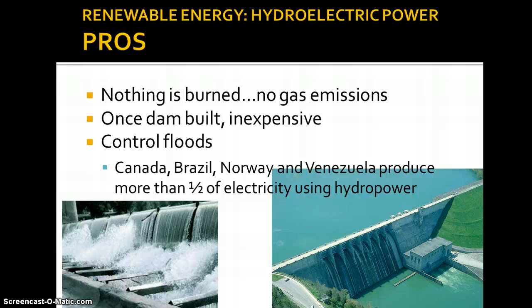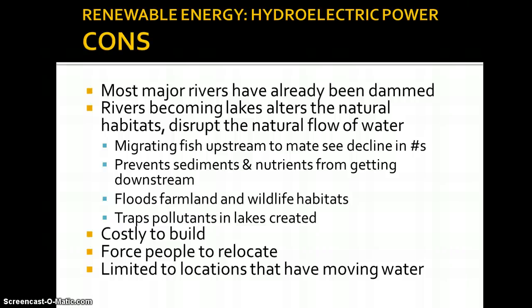A big pro to using hydroelectric power is that you are not burning any fuels — there are no emissions whatsoever, no pumps, nothing. Once the dam is built — of course it's expensive to build — but once it's built, the ongoing expense is very low. It also controls floods because you can control how much water goes through. If there's a lot of rain, you can let more water through and actually get more electricity. Canada, Brazil, Norway, and Venezuela produce more than half of their electricity using hydropower. The United States does it too, but you have to be located near a major river.